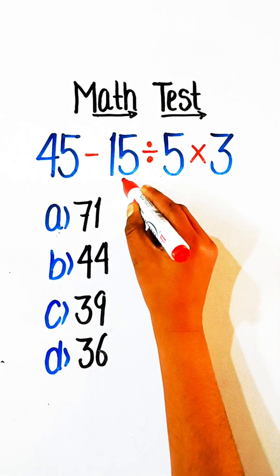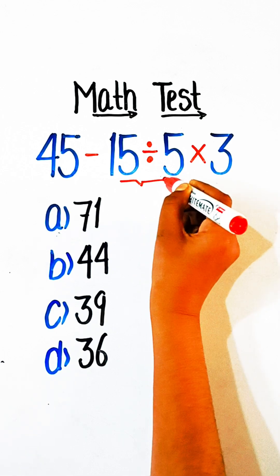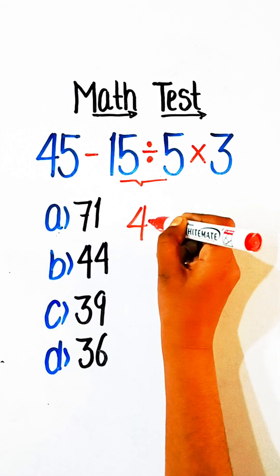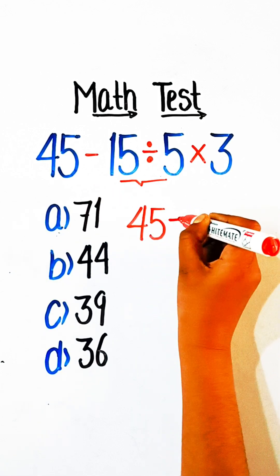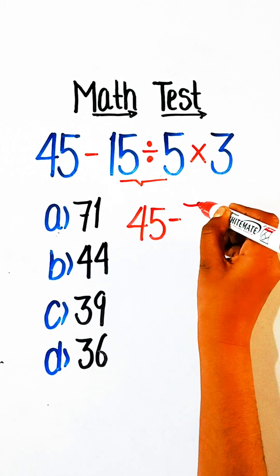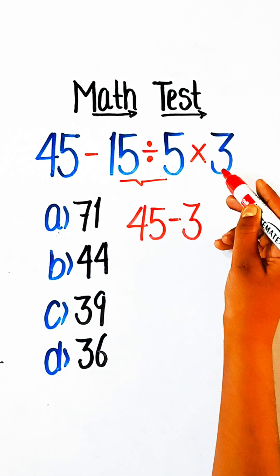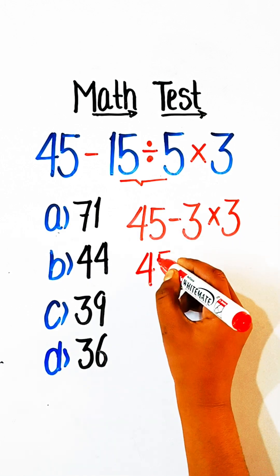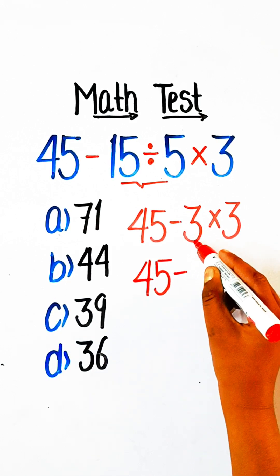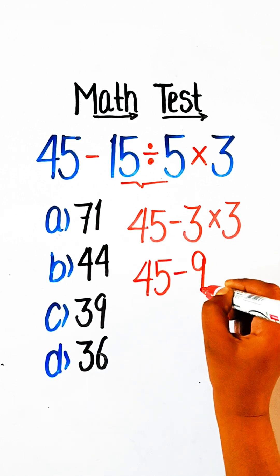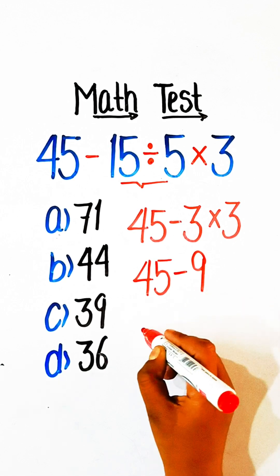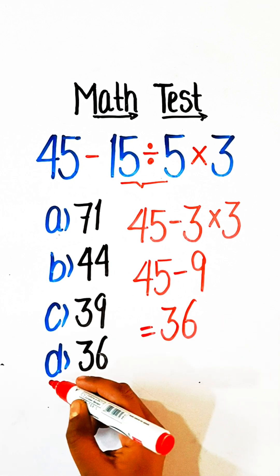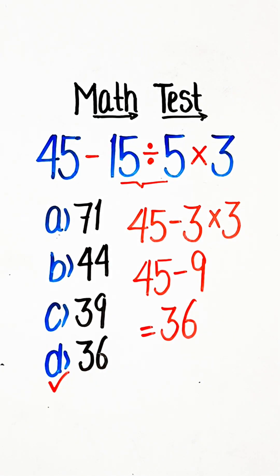So let's solve this. First we have to solve the division part, so we will write here 45 as it is. 45 minus 15 divided by 5 is 3, multiply 3 — 3 threes are 9, so we will write 9 here. 45 minus 9 equals 36, so Option D will be our correct answer.